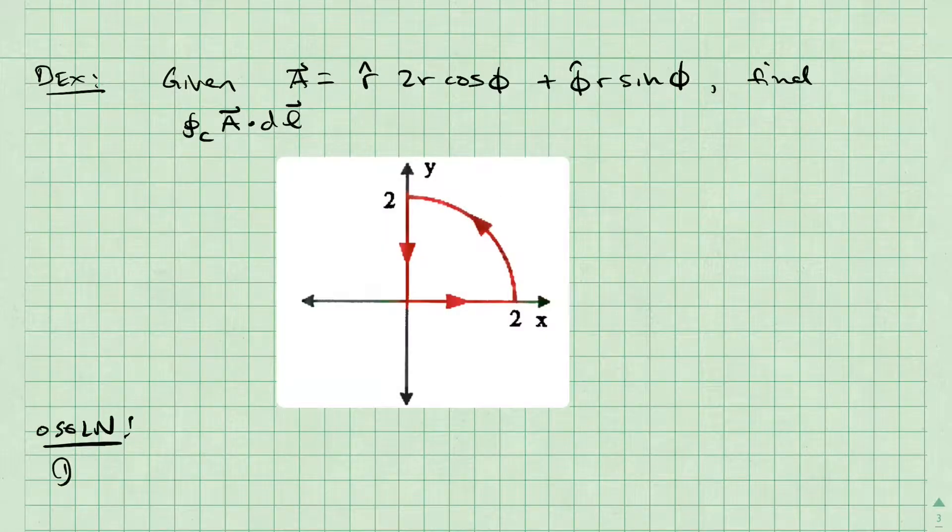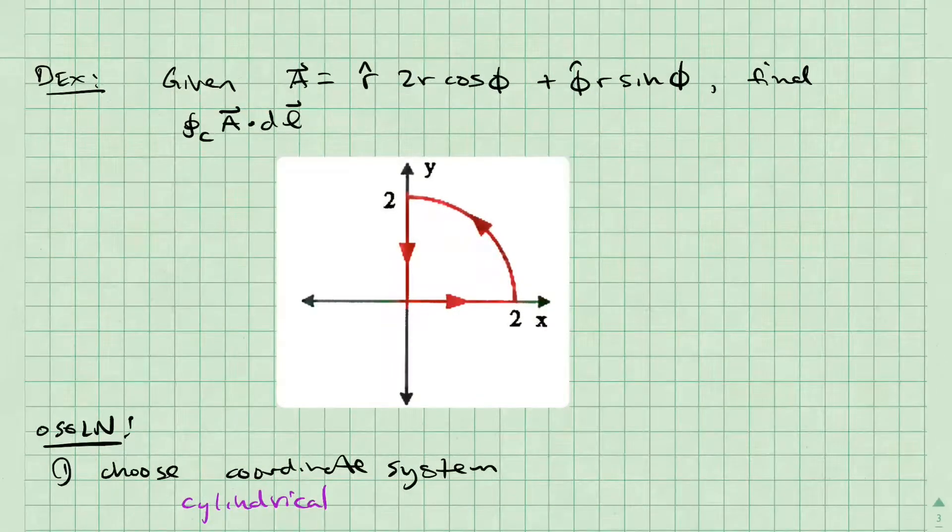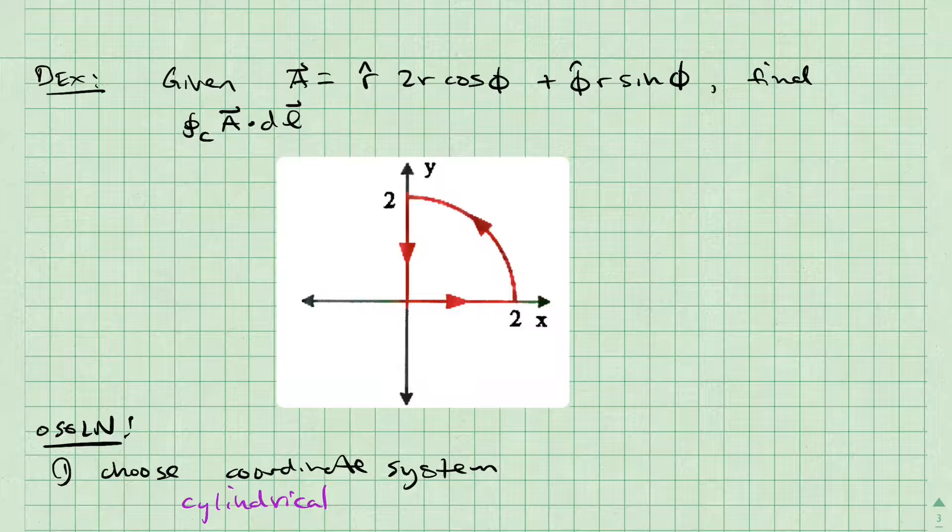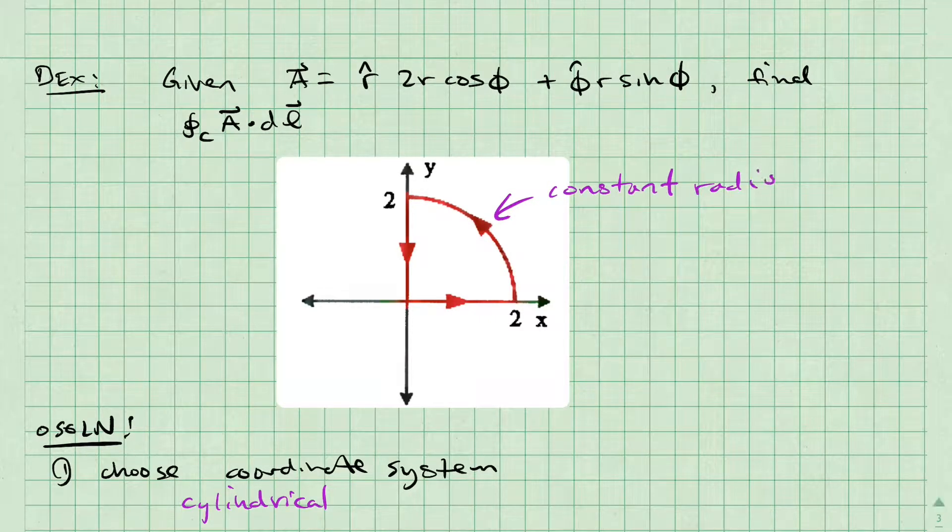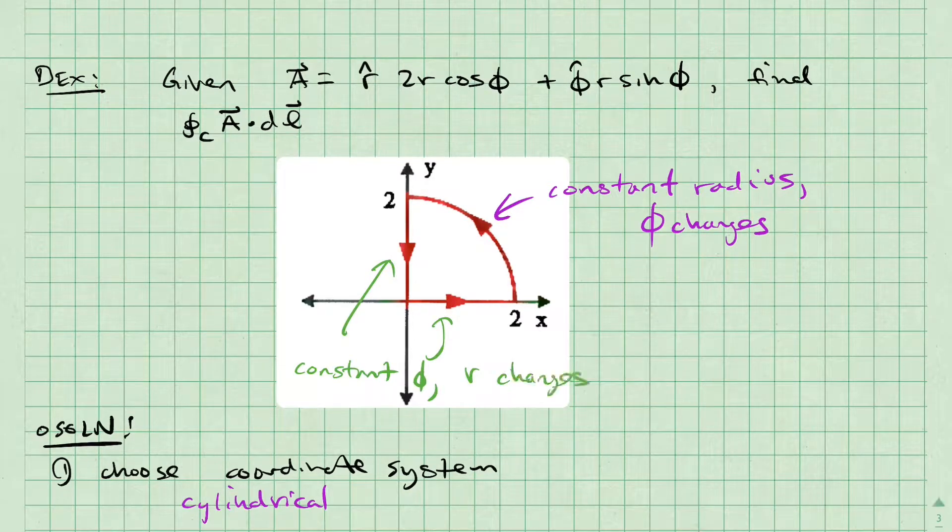Let's apply our procedure to an example. In this example, it should be clear from the definition of the vector field that I'm going to choose the cylindrical coordinate system. Looking at the contour I'll be integrating around, I notice that in the curved part I have a constant radius but the angle phi is changing. In the straight parts the radius will change but the angle will stay the same.